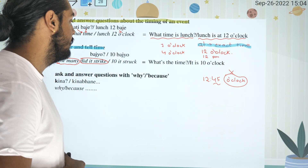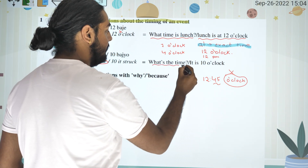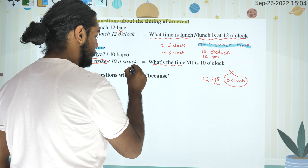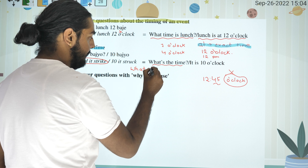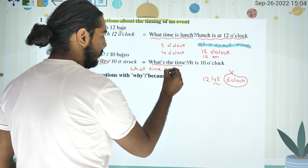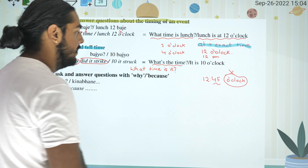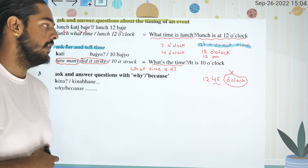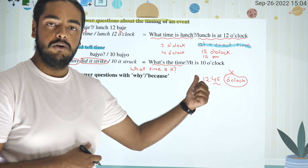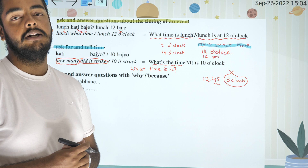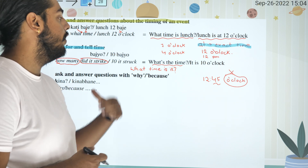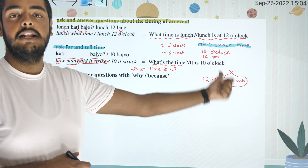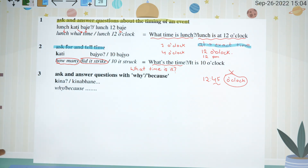What is the time? What's the time? What time is it? What time is it? What's the time? It's 10 o'clock. It is 10 o'clock. It is 11 o'clock.